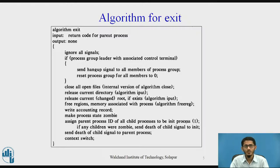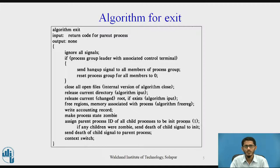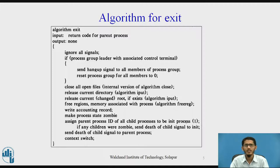Thus, if a user types the end-of-file character (Control-D) in the login shell while some processes associated with the terminal are still alive, the exiting process will send them a hangup signal. The kernel also resets the process group number to zero for the processes in the process group, because it is possible that another process will later get the process ID of the process that has just exited and that it too will be a process group leader. Processes belonging to the old process group will not belong to the later process group. The kernel then goes through the open file descriptors, closing each one internally using the algorithm close.